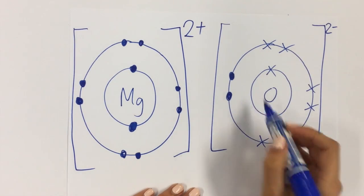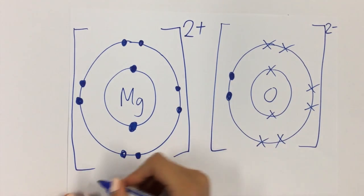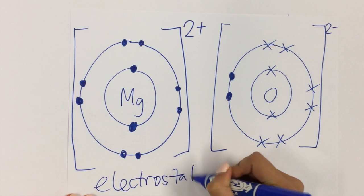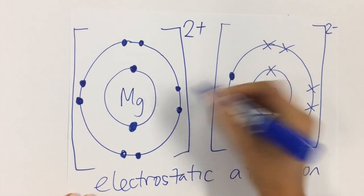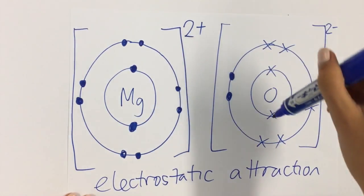Now, the question is, what holds these two things together? It's the same thing as before. It's that big buzzword, which is electrostatic attraction. That's the thing that holds together the positive and negative oppositely charged ions that you've formed as a result of transferring those electrons.